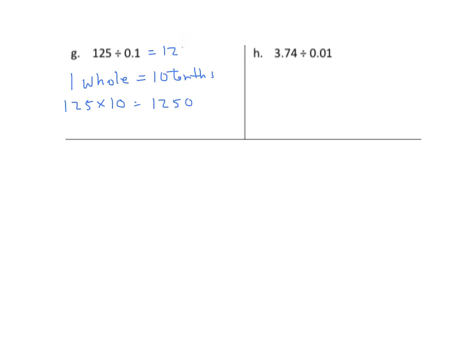We can relate this to our place value chart. When we're dividing by one-tenth, we're actually multiplying by ten. So we can go back to the unit fraction approach: one hundred twenty-five divided by one-tenth means one hundred twenty-five times ten equals one thousand two hundred fifty.